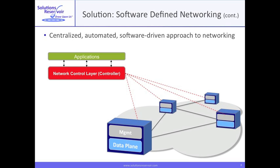Here's our software-defined network with its centralized applications and control planes. The controller is the all-knowing power in an SDN. It self-discovers network topology, determines the routing or flow tables for network elements, automatically translates high-level commands into detailed network-wide execution, and maintains network virtualization. Redundantly configured, the controller runs on commodity servers, so with a small capital expense, the servers and controller performance can be upgraded as needed.